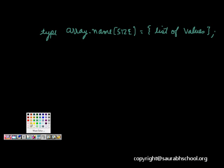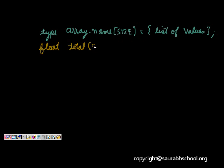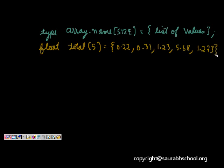Let's take a float example. I want an array float total[5]. I assign: total[0]=0.22, total[1]=0.31, total[2]=1.23, total[3]=5.68, and total[4]=1.273. So total[3] will equal 5.68 — it becomes very simple to initialize values this way.